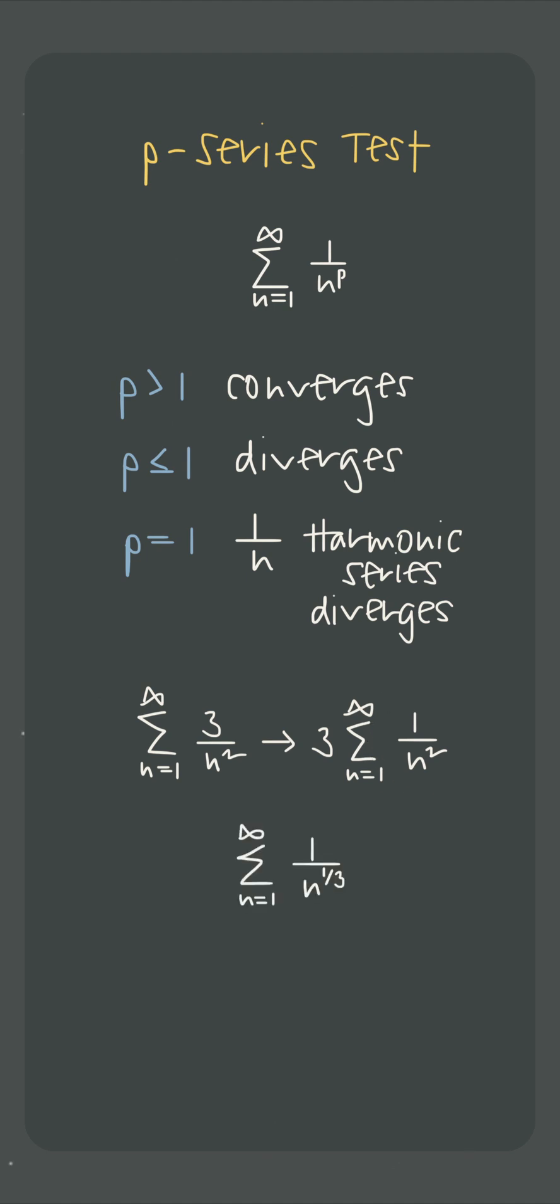This is a p-series because 1 third, even though it's a fraction, is still just less than 1, so the series diverges.